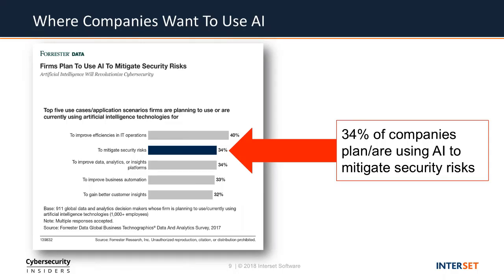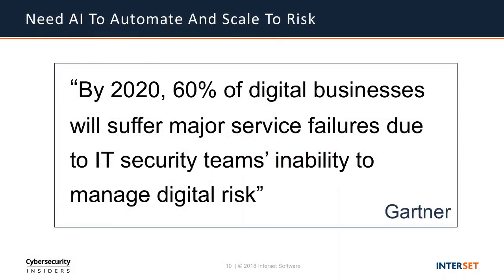There's a recent survey from Forrester where, thinking about using AI to help mitigate security risks, 34% of the industry believes this is something really important to implement in the next year. The stakes are higher than ever. AI is obviously not a silver bullet, but it can really help your teams. As a tool to help your smart humans focus and gain visibility into risk inside the environment, they really deserve that technology. AI can be a really powerful weapon for the force of good when properly implemented.